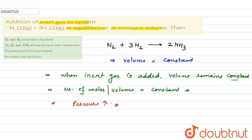So let's see the options. N2 and H2 are formed in abundance? No, wrong. N2, H2, and ammonia will have the same molar concentration. Yeah, this option is the correct because volume is same and number of moles per unit volume are same. So option second is correct.